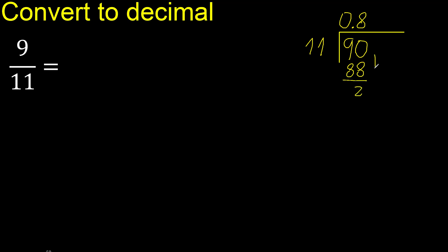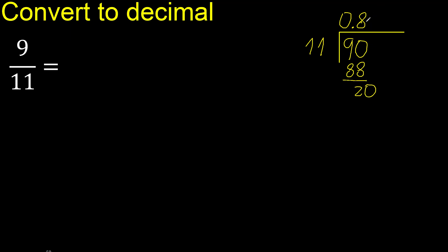Next — there is no number to bring down, so complete. Always complete with 0. Now we have 20. 11 multiplied by 2 is 22, which is greater. So multiplied by 1: 11.